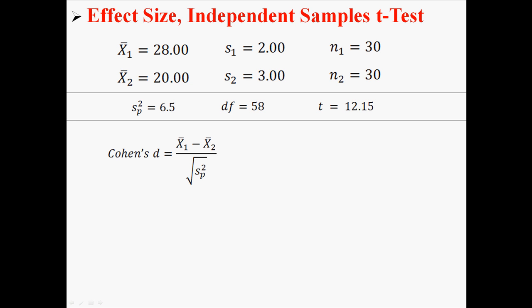We're going to use Cohen's d to find effect size. Cohen's d is just the difference of the two means divided by the square root of the pooled variance. So using this information that you would already have if you did a t-test, we can put those into the equation to find the effect size. And doing it just like that, we get a Cohen's d of 3.14.